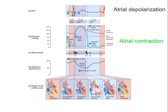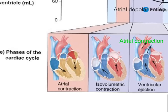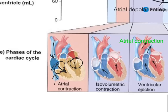Let's start with the first phase of the cardiac cycle, which is atrial contraction. From a previous cycle, the AV valves are open, which means that blood returning to the heart — either from the body or from the pulmonary veins — is going to be coming into the atria, and because these valves are open, it will be passively filling into the ventricles.